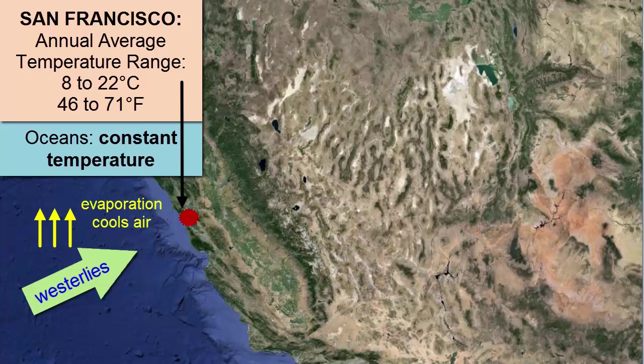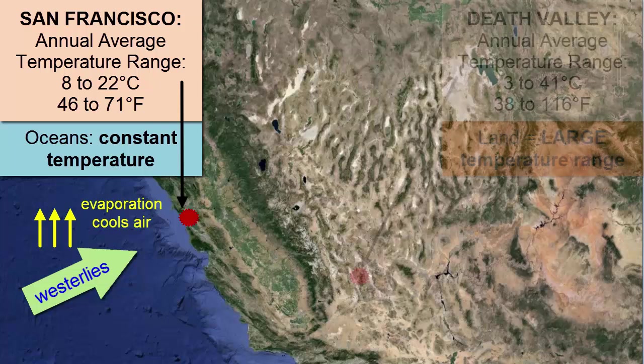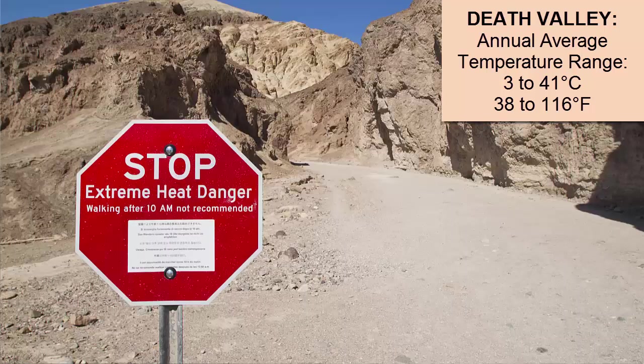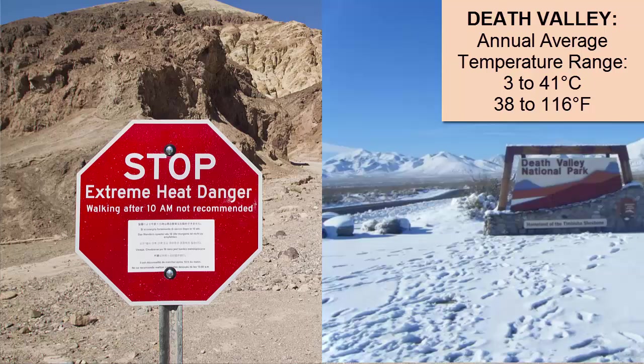Without the nearby water, like in Death Valley, the low heat capacity of the land causes huge unmoderated fluctuations in temperature — from warm summers with temperatures as high as 120 degrees Fahrenheit to cold winters where it gets below freezing and snowfalls.